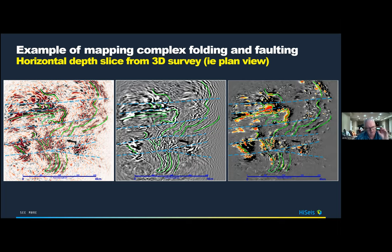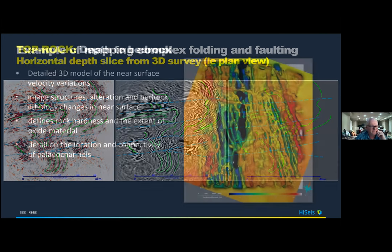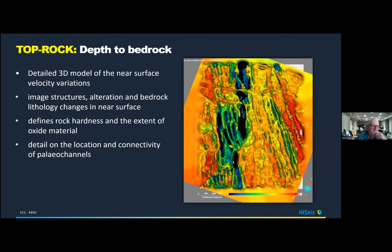This is from the same survey looking at different visualizations of the same section in different color scales and different attribute space. A nice byproduct of the depth imaging workflow is a detailed model of the very near surface — we call it 'top rock.' It's a high-resolution model of the near surface velocity down to fresh rock, and this time slice through the 3D shows that near-surface velocity detail.